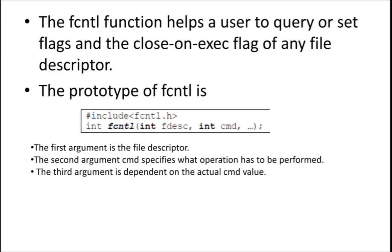The FCNTL function is going to help the user to set a flag, or it can also be used to query about the flags. That means if you want to know whether a flag is set or not, it is going to check the values using the FCNTL function. In simple words, for a file, I can set some flags like permissions — read permissions, write permissions. If I want to change those flag values, I want to change the permissions of the file, I can change the value of the permissions using the FCNTL function.